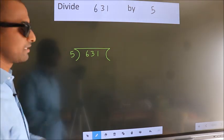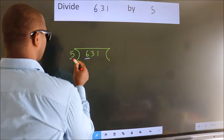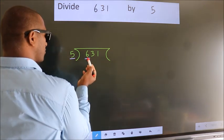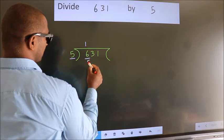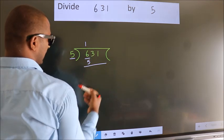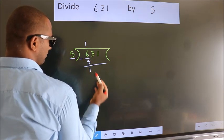Next, here we have 6, here 5. A number close to 6 in the 5 table is 5 once, which is 5. Now we subtract. We get 1.